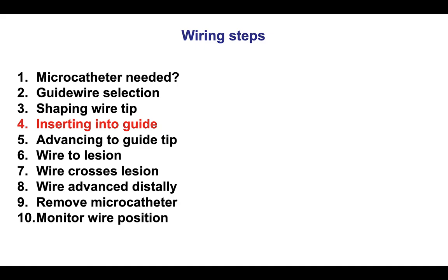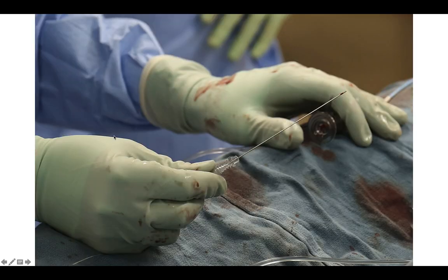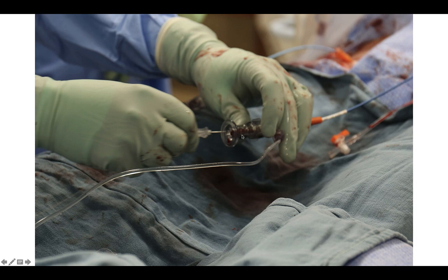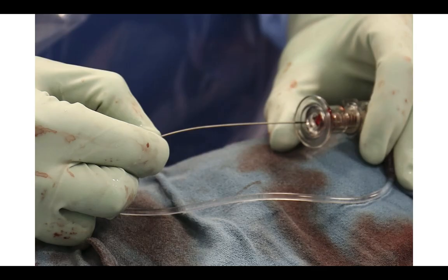The next step is to insert the guide wire into the guide catheter. The wire is pulled back into the introducer needle, because if it is protruding, the moment of insertion can lead to damage of the guide wire tip. Then the guide wire is advanced through the Y connector. If a microcatheter is used, the microcatheter can be used for inserting the guide wire into the body, and then the tip of the microcatheter is used instead of the introducer to go through the Y connector.